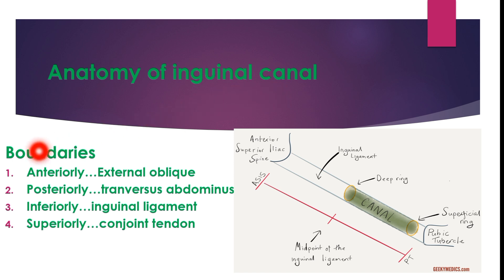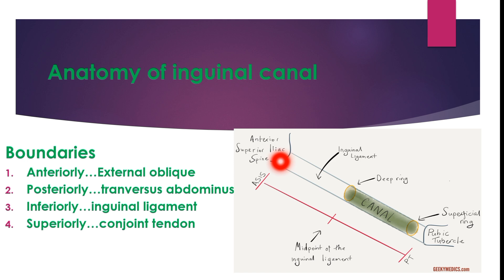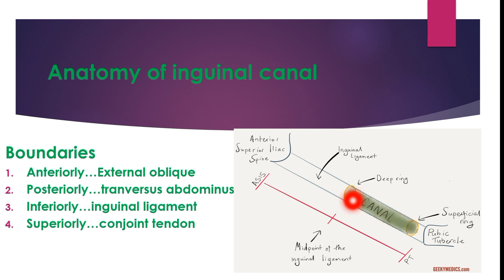Now let's discuss the anatomy of the inguinal canal. Anteriorly, the canal is bounded by the external oblique muscle; posteriorly by the transversus abdominis muscle; inferiorly by the inguinal ligament; and superiorly it contains the conjoint tendon. Between the anterior superior iliac spine and the pubic tubercle lies the inguinal ligament. At the midpoint is the deep ring, and near the pubic tubercle is the superficial ring. The inguinal canal runs between these two rings, and the spermatic cord passes through it from the scrotum into the abdominal cavity. Indirect hernias pass through the inguinal canal, while direct hernias protrude directly through the posterior abdominal wall via Hesselbach's triangle.